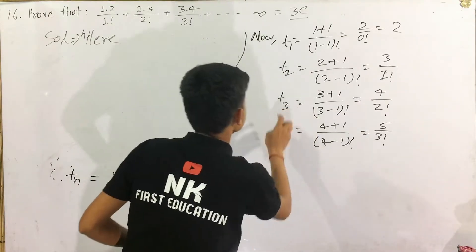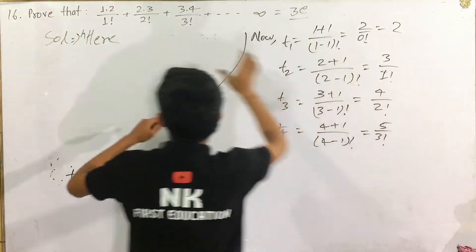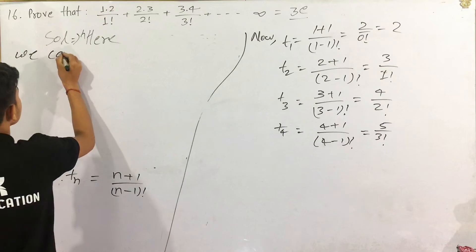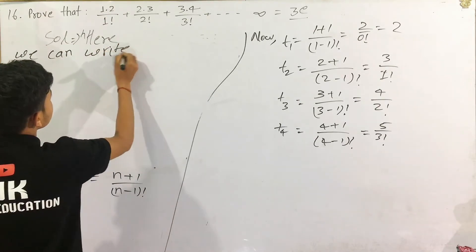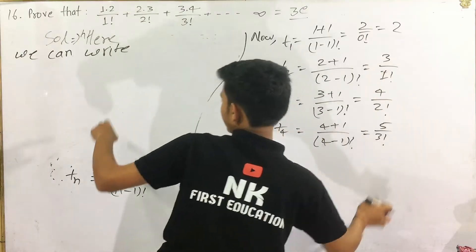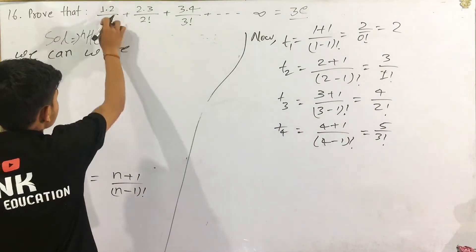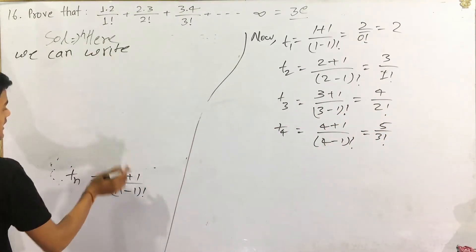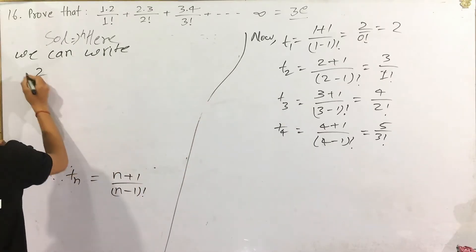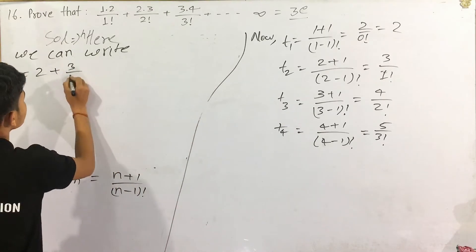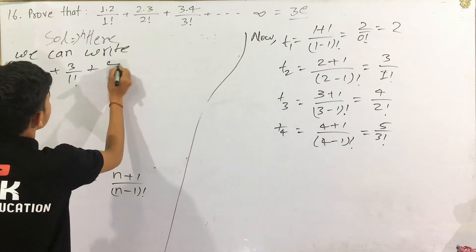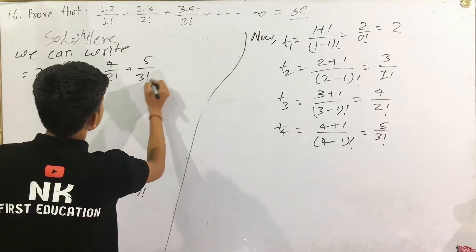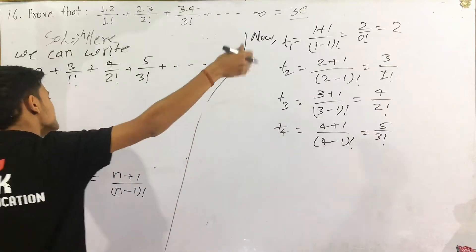We can write it like this: T2 is 3 by 1 factorial, plus T3 is 4 by 2 factorial, and T4 is 5 by 3 factorial, and 6 by 4 factorial, and so on — the goal is to find the general term.